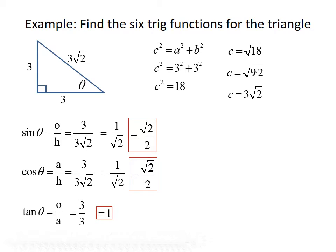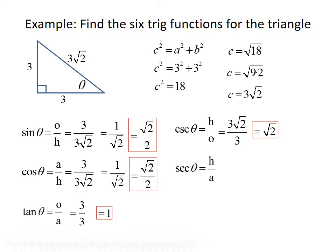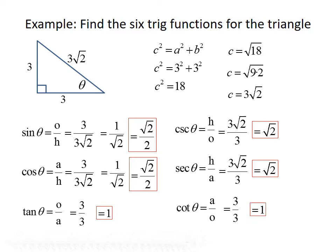The tangent of theta is the opposite over adjacent, so that will be 3 divided by 3, giving us tangent of theta equals 1. The cosecant of theta is hypotenuse over opposite, so that's 3 root 2 divided by 3 — the 3s cancel, leaving root 2. Secant of theta is hypotenuse over adjacent, again 3 root 2 over 3, leaving just root 2. And the cotangent of theta is adjacent over opposite, which is 3 over 3, so cotangent of theta equals 1.